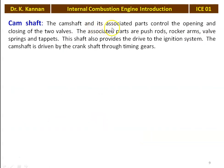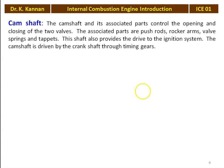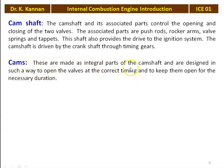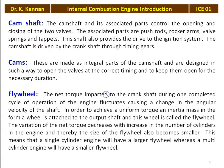The camshaft and its associated parts control the opening and closing of the two valves — the inlet valve and the exhaust valve — which are activated by the cam. The associated parts are the pushrod, rocker arm, and valve spring. The shaft also provides drive for the ignition system. The camshaft is driven by the crankshaft through the timing gear, and the camshaft rotates at half the speed of the crankshaft — when the crankshaft makes two revolutions, the camshaft makes one revolution. The cams are an integral part of the camshaft and are designed to open at the correct timing and keep the valves open for the necessary duration.